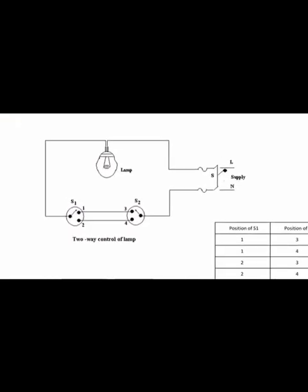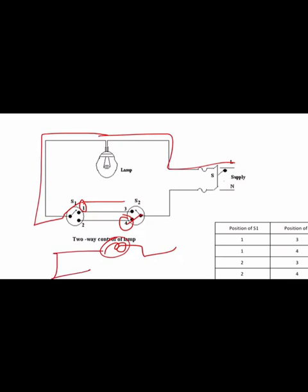When switch S1 is connected at position one and switch S2 is connected at position four, the current goes from line to lamp to S1 at one, then through the one-to-three connection, but S2 is at position four — so there is an open circuit with no closed path, and the lamp will not glow. When S1 is at position two and S2 is at position four, we have a two-to-four connection, giving a closed path so the lamp will glow.